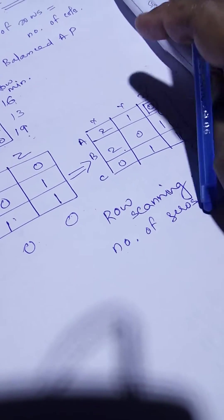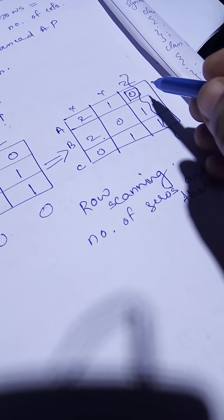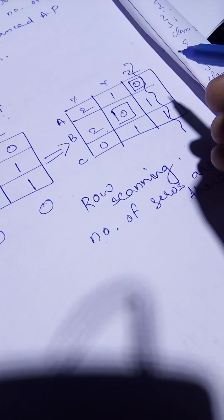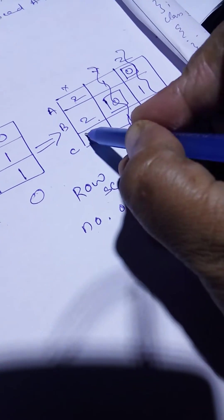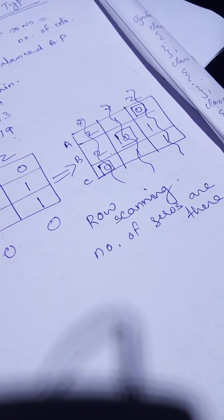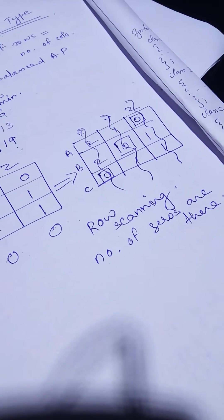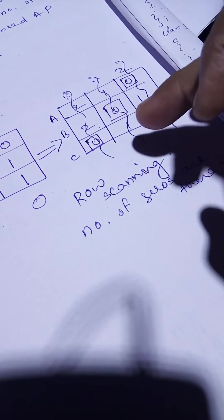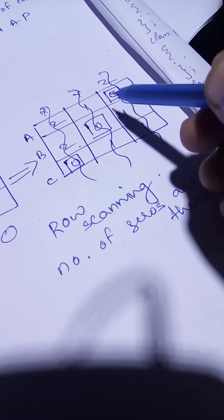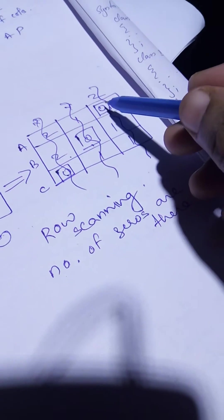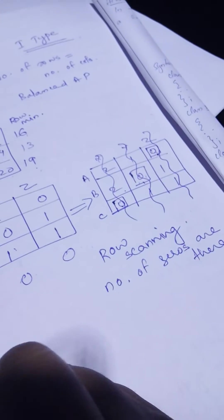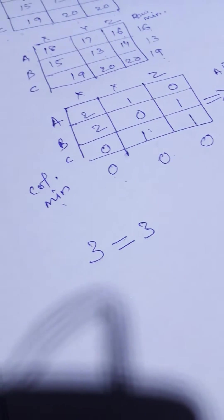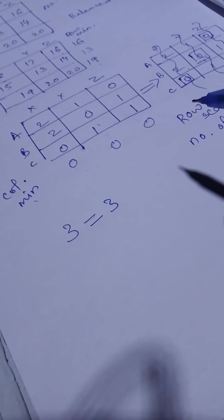Move to row B: only one zero — square it and cut that column. Row C: only one zero — square it and cut that column. All columns have been removed. Check whether any unmarked zero remains — none found, all zeros are squared. Count squared zeros: 1, 2, 3 — three squared zeros. Number of rows is also 3 (A, B, C), so the condition is satisfied and the problem is valid.